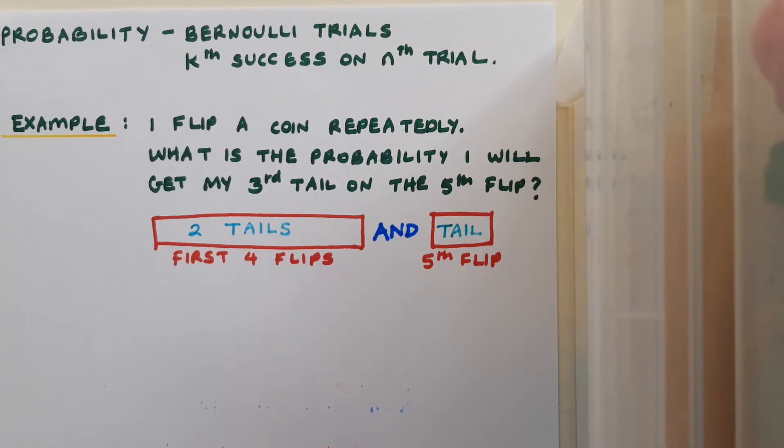So overall, I'm going to end up having got three tails out of the five flips. So to find the probability of getting two tails in four flips, I'm going to use the same approach as I used for Bernoulli trials in the previous video. And the formula n choose r, p to the power of r, q to the power of n minus r.